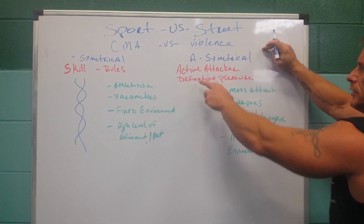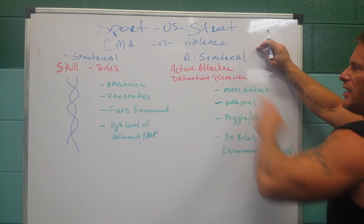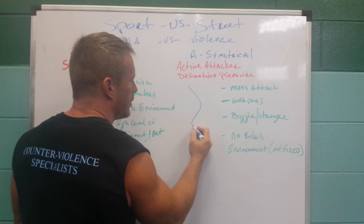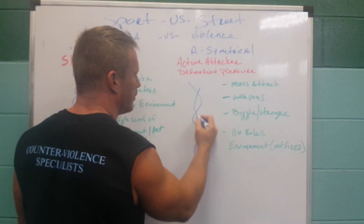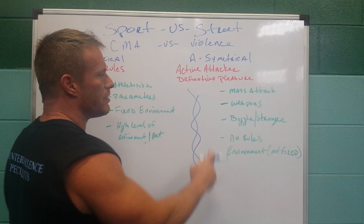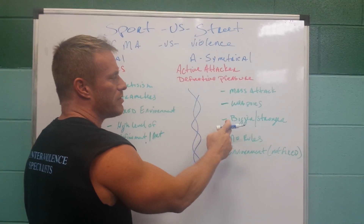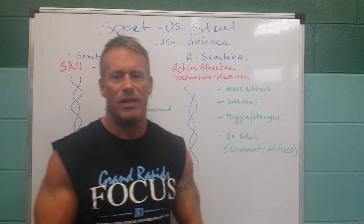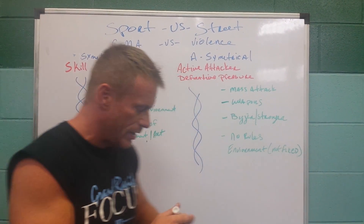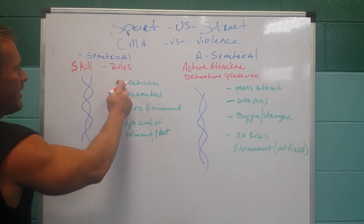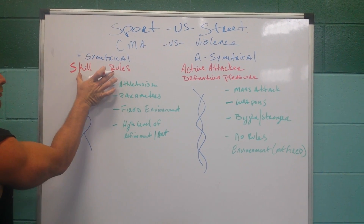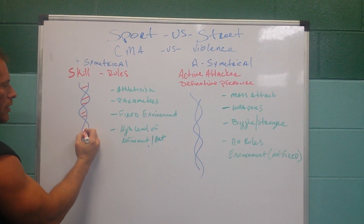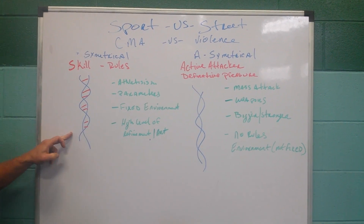The street side is asymmetrical — an active attacker with definitive pressure. The characteristics are mass attack, weapons, bigger and stronger, and no rules. Notice the environment: it's not a fixed environment, anything goes. What we see here is these characteristics run by these two boundaries create a fingerprint or a DNA model.